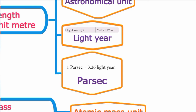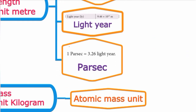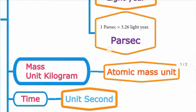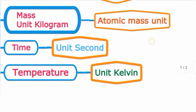Parsec is a unit of distance used to measure astronomical objects outside the solar system. Next, time — the unit of time is the second. And temperature, which measures hotness and coldness.